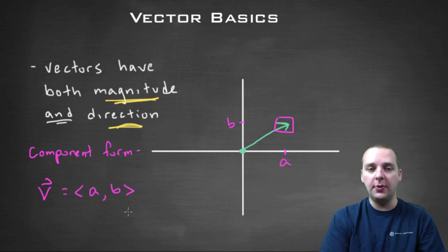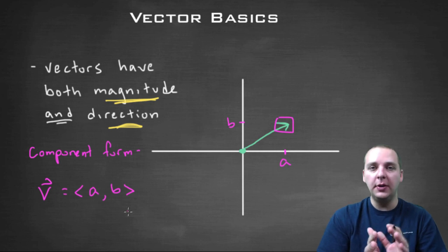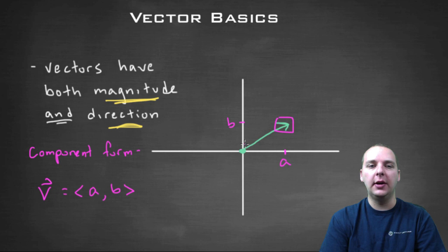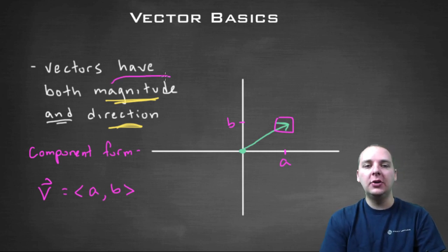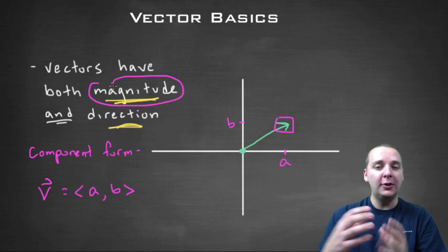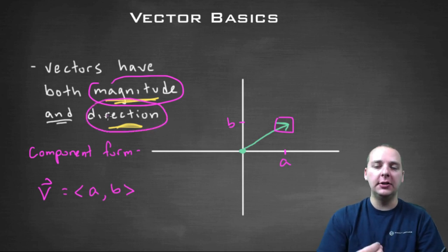Now there's another way to write vectors that we'll talk about in another video that uses what's called standard unit vectors, which is a little bit different, but it still represents the same vector there. So anyways, what I want you to take away from this video is that vectors represent an infinite number of line segments, and they all have a certain magnitude or length to them, and they also have a certain direction as well. Both of those are important to remember.